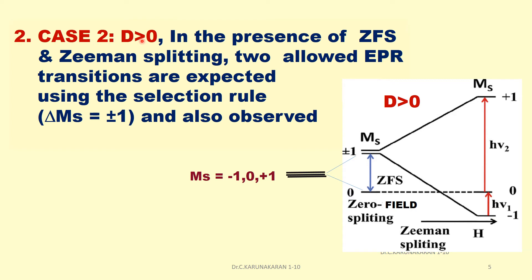In Case 2 (D > 0), in the presence of zero field splitting the triplet state splits: the lower level is singly degenerate (ms = 0) and the higher level is doubly degenerate (ms = ±1). In the presence of Zeeman splitting it further splits into ms = -1 and ms = +1. Here hν₁ ≠ hν₂, and there are two allowed transitions using the EPR selection rule, so two EPR transitions are observed.